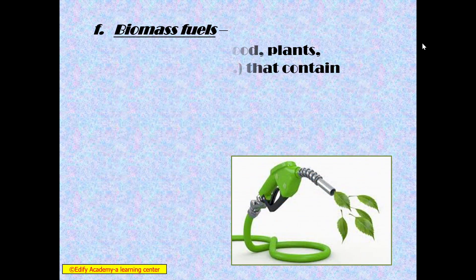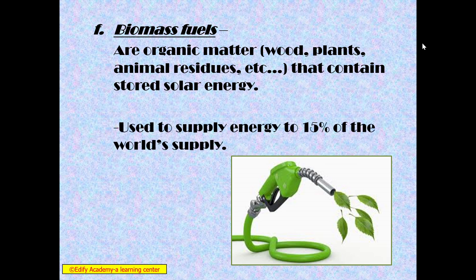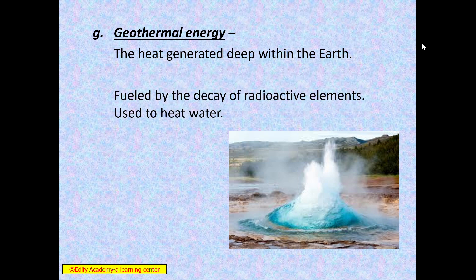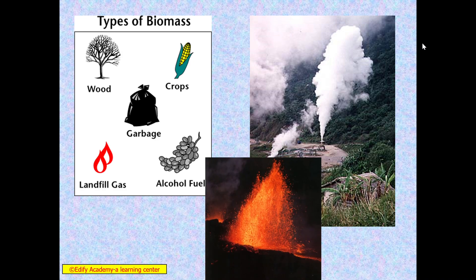Biomass fuels are organic matter like wood, plants, and animal residue that contain stored solar energy. We convert those organic compounds into biomass fuels. It is used to supply energy to 15% of the world's energy supply. Next is geothermal — the heat energy inside the earth's surface. The heat generated deep within the earth is called geothermal energy. It is fueled by the decay of radioactive elements and used to heat water. We can see fissures with gas coming out — that is heat, and also lava from volcanoes.